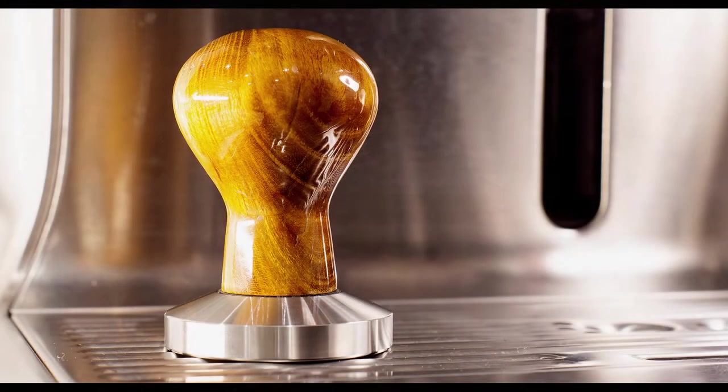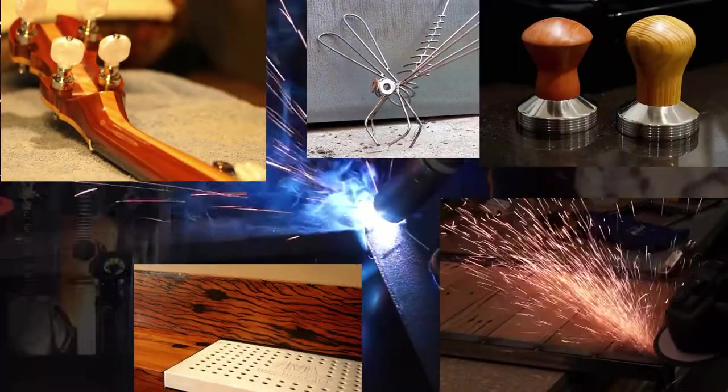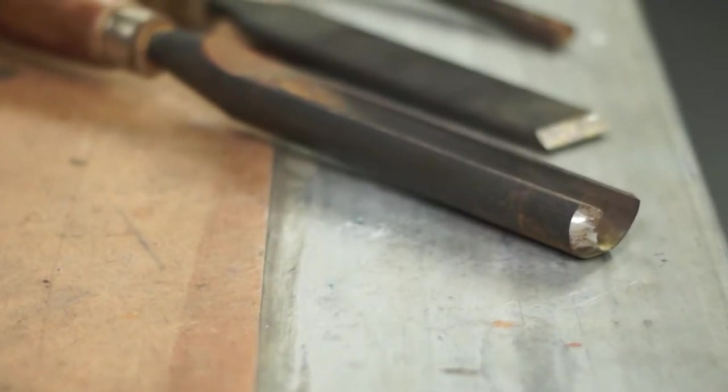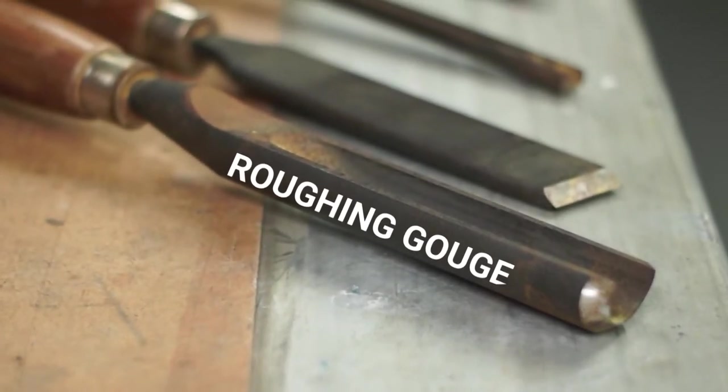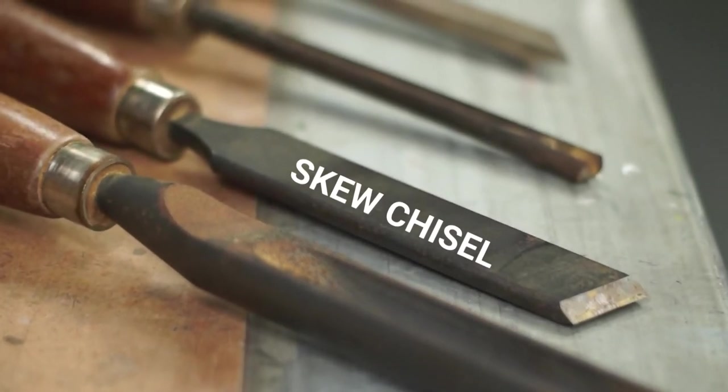G'day, it's Rowan and tonight I'm going to make a coffee tamp handle. So what's the problem I'm trying to solve? Well, I haven't given my brother a birthday present for a few years, and I know he uses a plastic tamp with his coffee machine. I reckon we can make something a little bit more stylish, maybe using some timber from mum and dad's old property. So this is a nice easy wood lathing project, but I'd like to say that I'm not an expert and this is not a how-to video. It's just showing the process I went through to make my project.